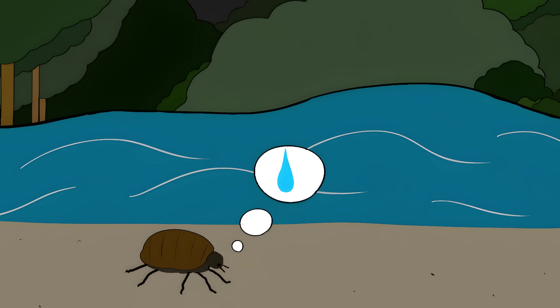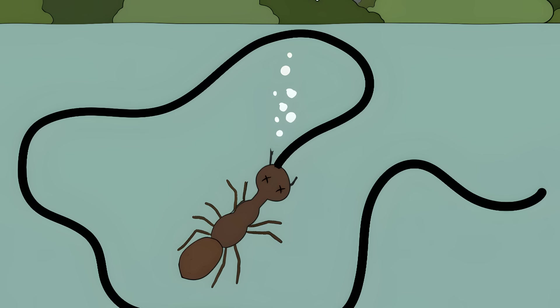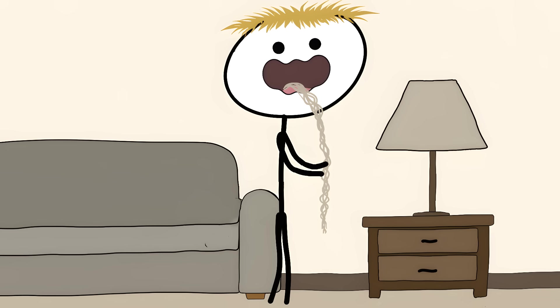The worm releases chemicals that hack the insect's brain, making it obsessed with finding water. The infected insect walks straight into pools or streams, basically committing suicide. As the insect drowns, the worm bursts out of its body. These worms can grow up to three feet long inside their tiny hosts. That's like having a rope slowly growing inside you.